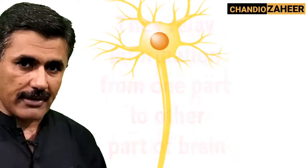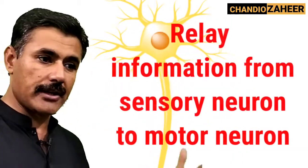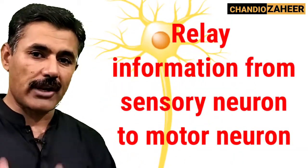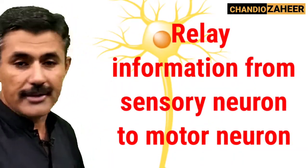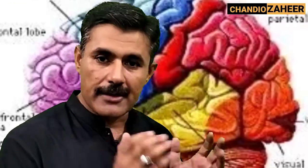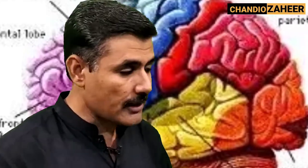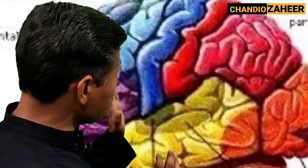They relay information from one neuron to another neuron, from sensory neurons to motor neurons. Therefore they are termed as relay neurons, association neurons, or inter-neurons. Inter-neurons are mostly present in the brain and in the CNS — the central nervous system.